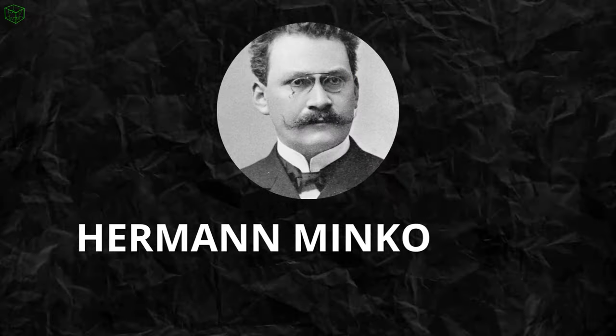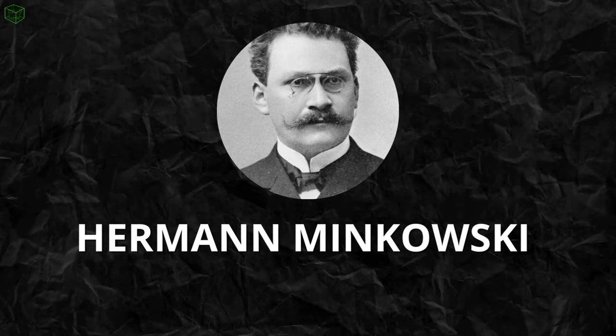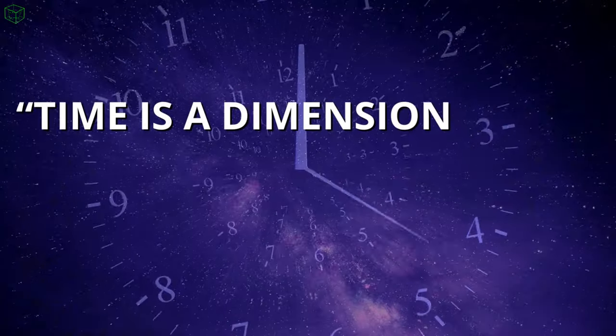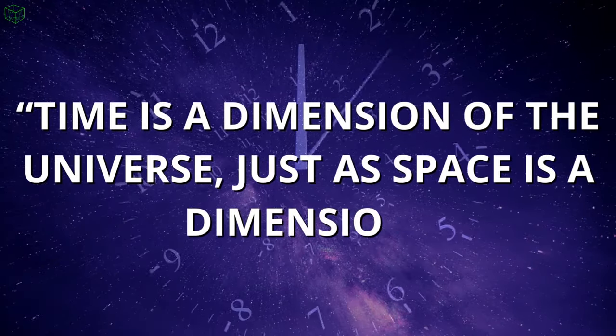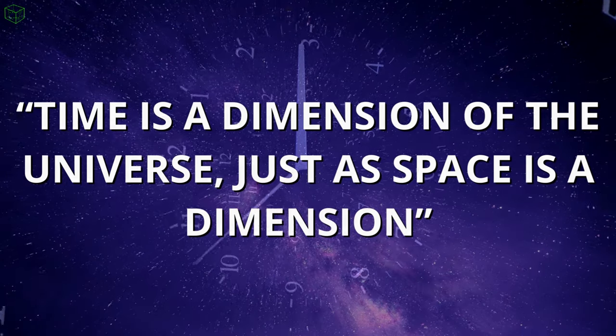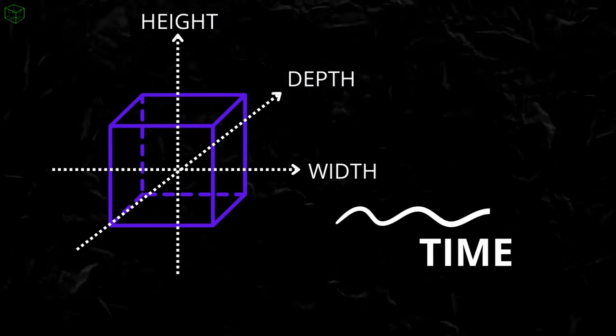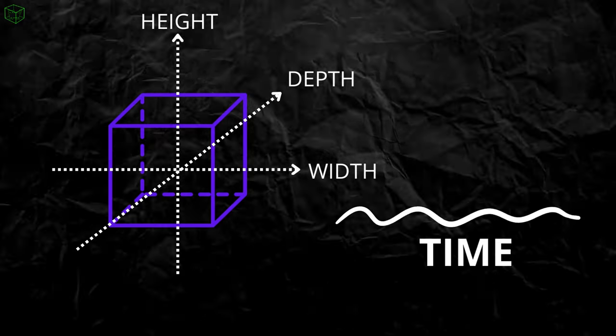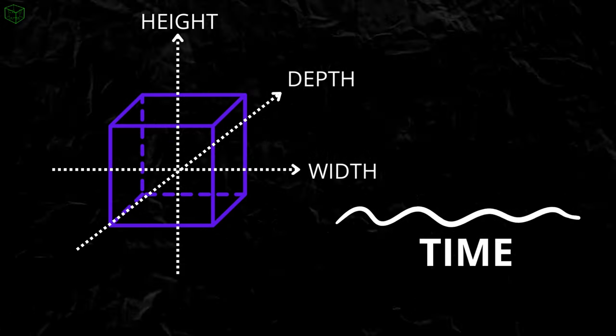One of the first individuals to provide a more precise definition for the concept of time was Hermann Minkowski. According to Minkowski, time is a dimension of the universe, just as space is a dimension. It's as if in real life we have three dimensions of space, width, height, and depth, and then we add one more dimension, time.